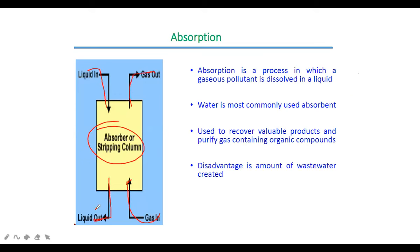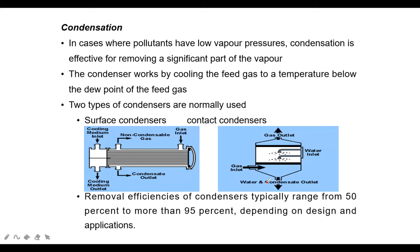Condensation is effective in cases where pollutants have low vapor pressure. In this method, dirty gas is directly purged into a liquid - water or some solvent - and the clean gas exits from the top while all the pollutant gases remain in the liquid system.